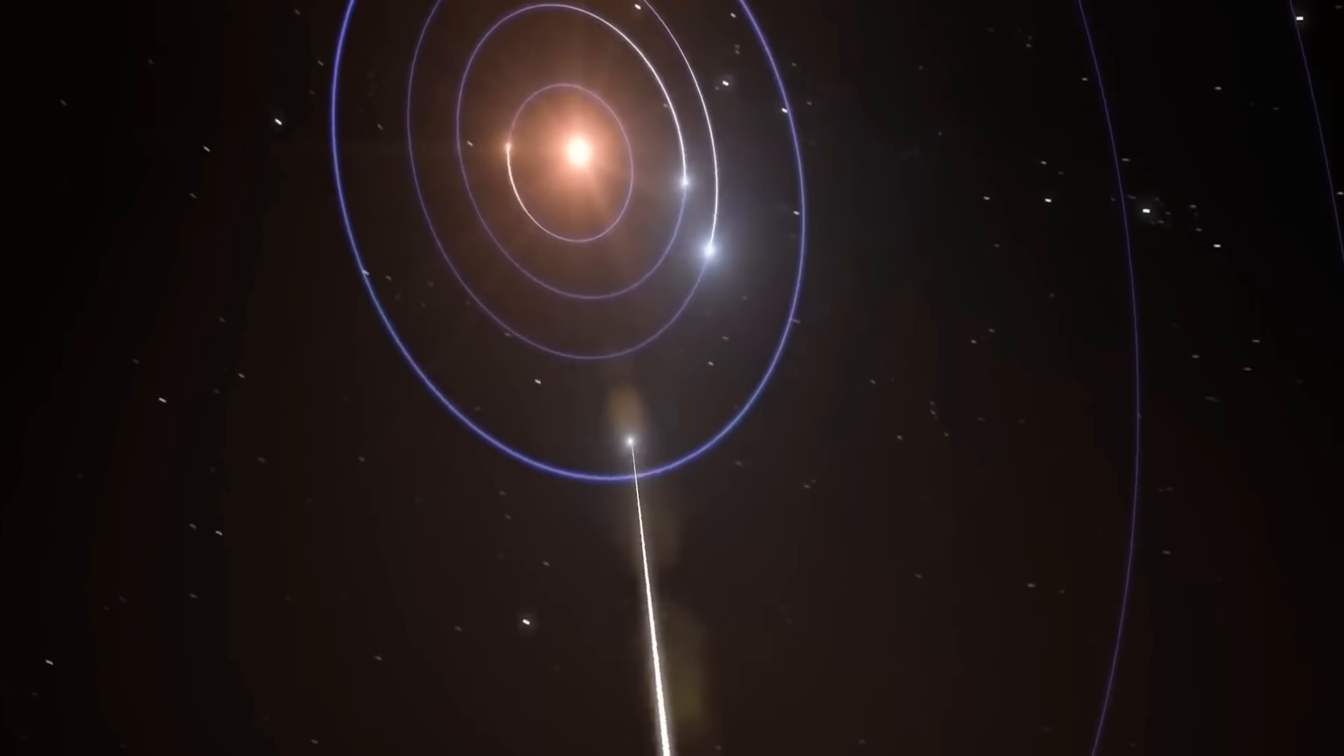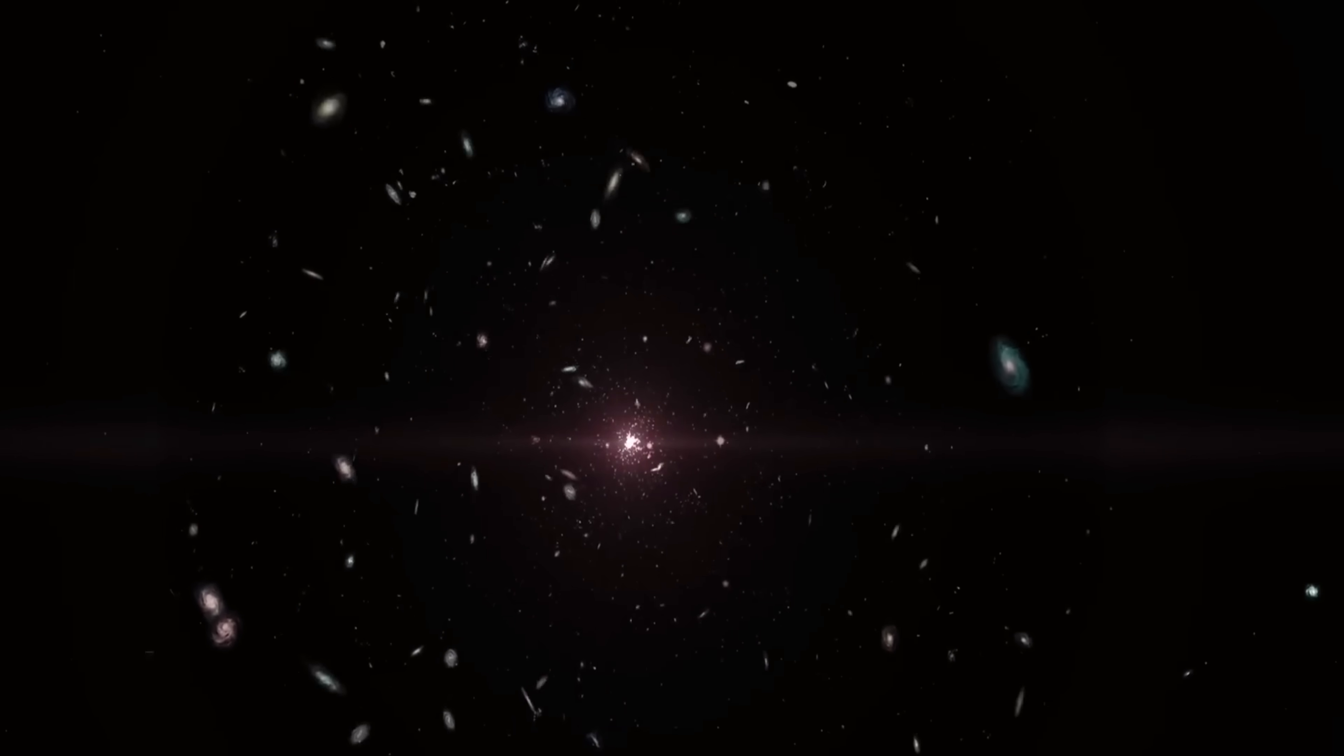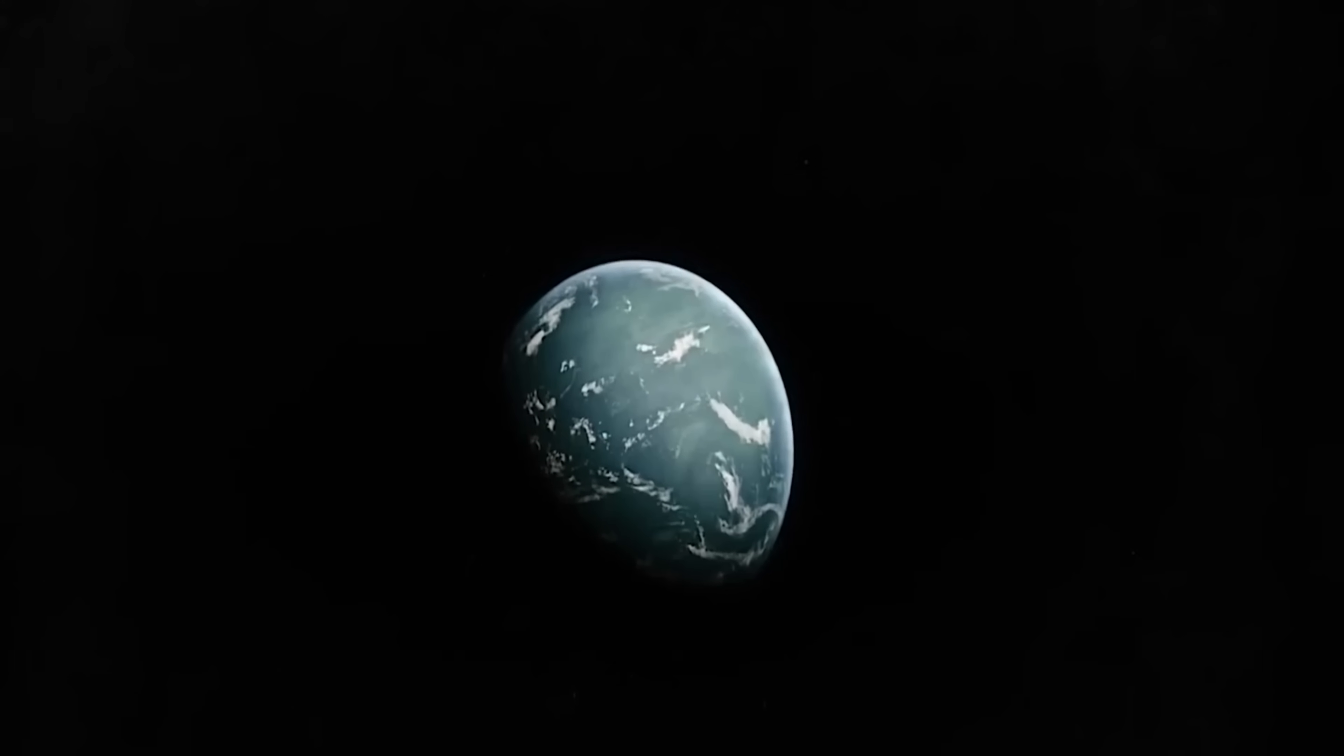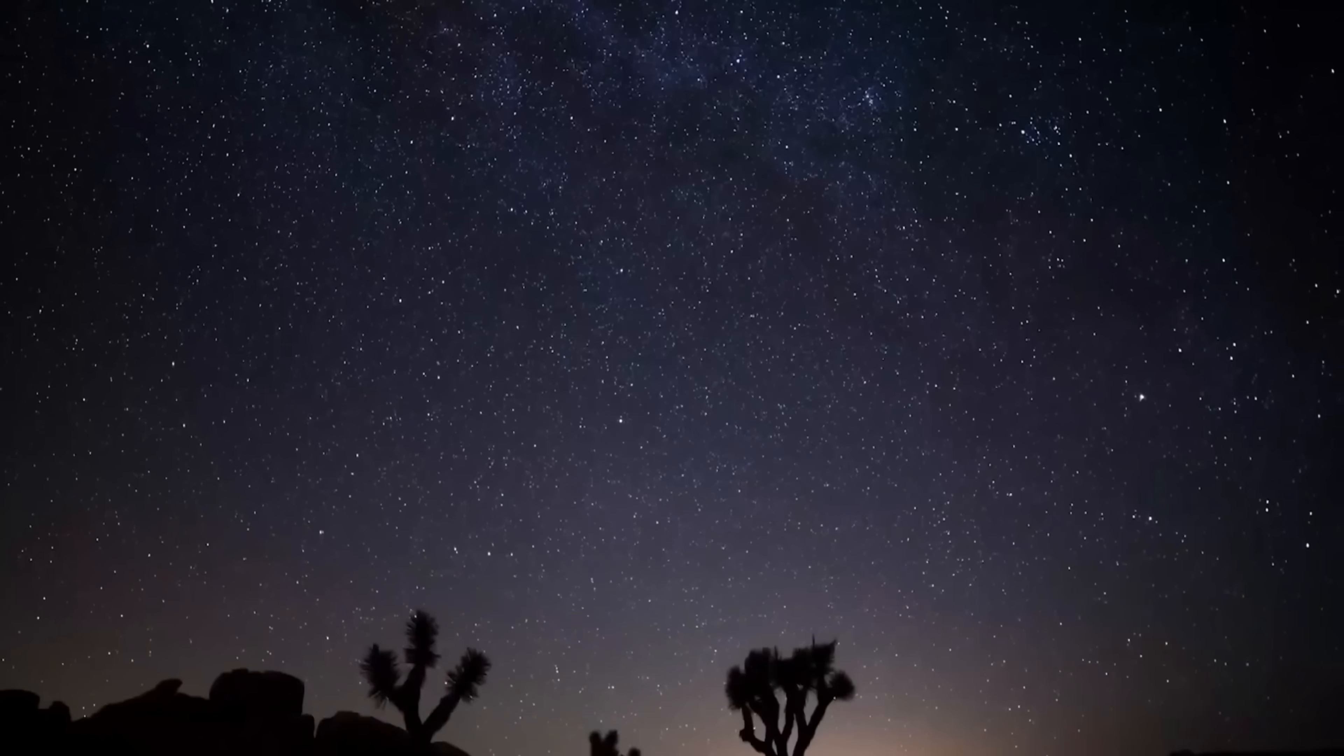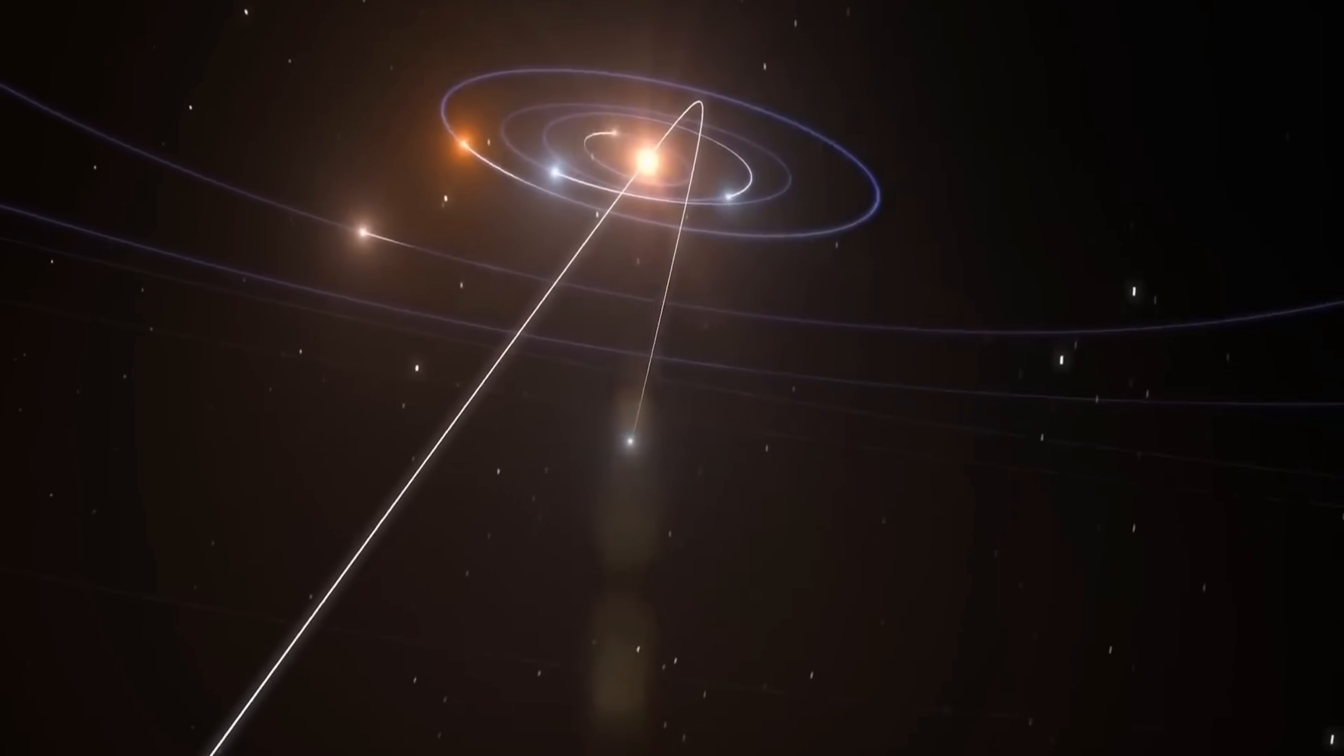Dark matter is a theoretical form of matter that is thought to make up a significant portion of the universe's mass, yet it does not emit, absorb, or interact with electromagnetic radiation like ordinary matter. Its existence is inferred from its gravitational effects on visible matter, such as galaxies and galaxy clusters, which exhibit behaviors that cannot be explained by the presence of only the observable matter. While dark matter has been widely accepted by the scientific community as a way to explain these gravitational anomalies, there are alternative viewpoints,